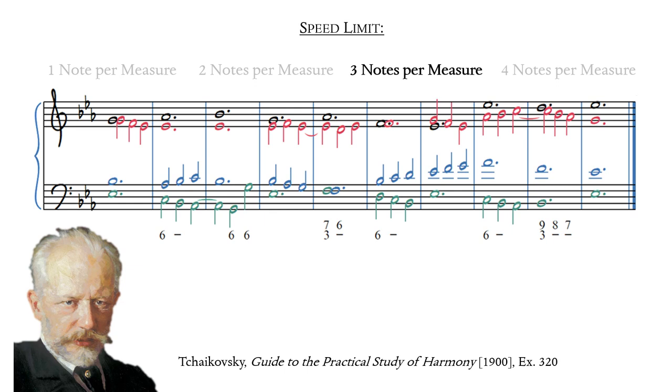Raising the speed limit to three notes per measure does not introduce anything especially new, except that now voice exchanges may be filled in with dissonant passing tones. Dissonant suspensions may also be prepared on beat three of a triple meter, and must resolve on beat two of the next measure. This type of exercise might also be an ideal opportunity to practice the voice leading of dissonant neighboring and auxiliary chords, which we learned about in the previous video.